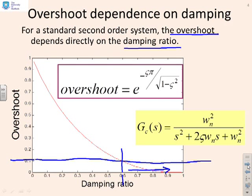Around 0.6, you get 10%; around 0.7, you get 5%, and so on.